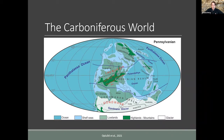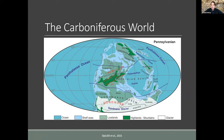The continents move through plate tectonics and have had very different configurations in the past. In the Carboniferous, we're seeing the early stages of the formation of the supercontinent Pangea, where the dinosaurs later originated. The shape of the continents strongly influences global climate. In the Carboniferous, we see a very strongly differentiated global climate — very cold and glaciated at the poles, but quite warm and wet at the equator.